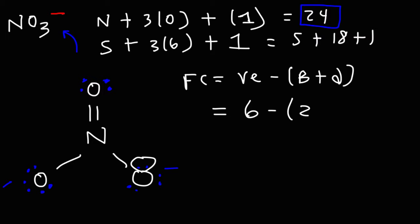Now let's do the same thing for nitrogen. If we calculate the formal charge on nitrogen, it has five valence electrons, four bonds, zero dots. So five minus four is plus one. Thus, the nitrogen at the center has a positive one formal charge.